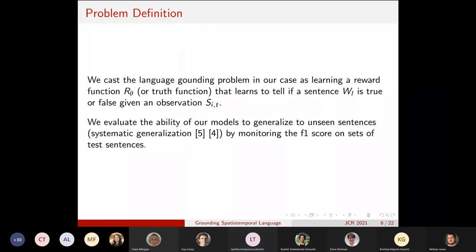So we have access to the whole traces of the objects over time as an input observation for our reward function. And then we evaluate the ability of our models to generalize to unseen sentences. This is a kind of systematic or linguistic generalization.